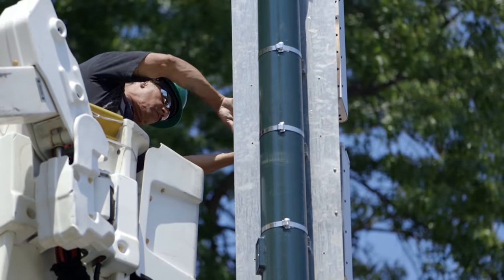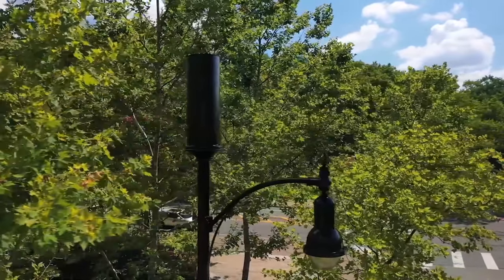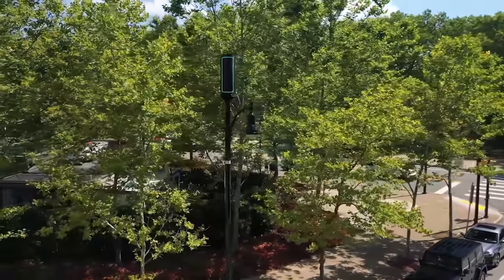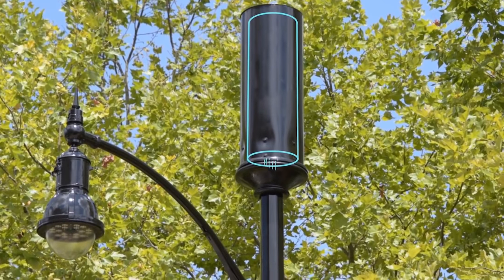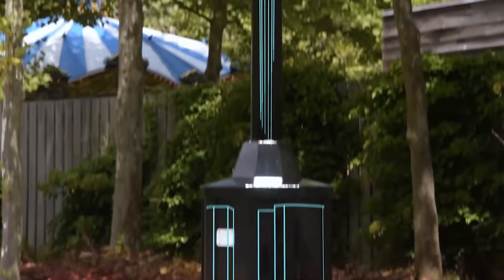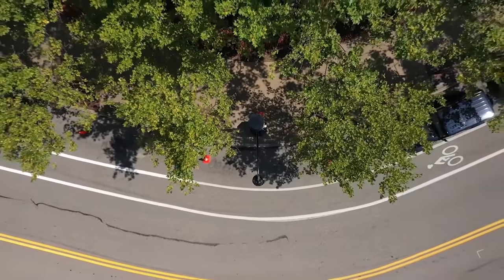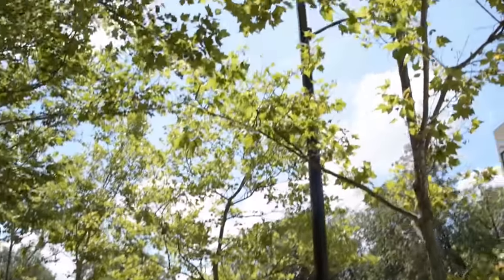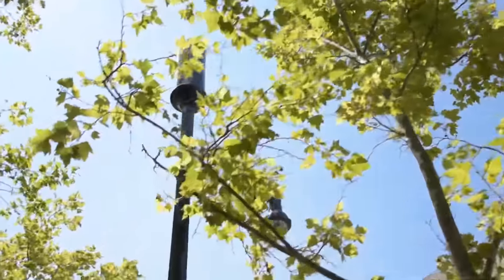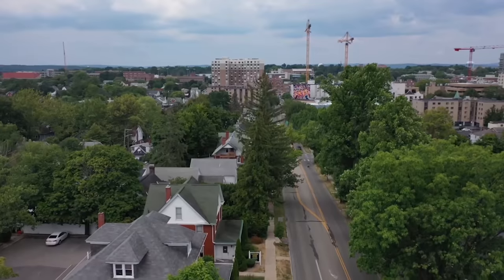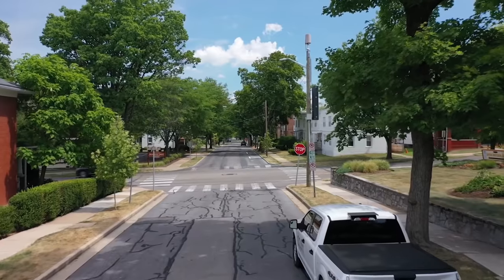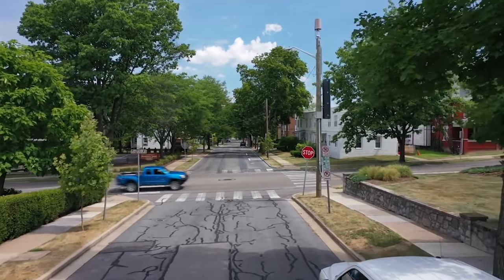Specifically, a small cell network consists of a series of small, low-powered antennas, often called nodes, that provide coverage and capacity in a similar way to a tower, with a few important differences. Small cells are always connected by fiber optic cable and attached to city infrastructure like street lights, utility poles, light poles, and slimline poles. There's a good chance that you have actually walked by these small cells before and never even noticed. Small cells are more discreet to local residents, while also bringing them closer to smartphones and other devices, which improves both coverage and capacity.